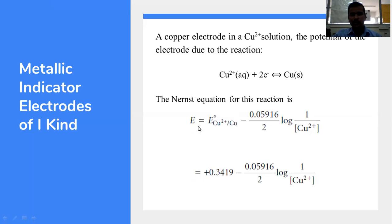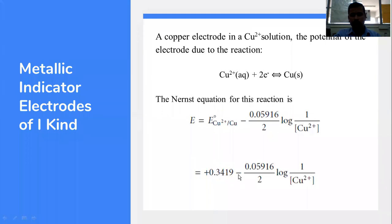This is called a reduction reaction. Writing the Nernst equation for this half-cell: E = E° (Cu²⁺/Cu) − 0.05916/2 × log(1/[Cu²⁺]). Here, n = 2 because two electrons are added to Cu²⁺. From the electrochemical series, the standard state reduction potential for the Cu²⁺/Cu couple is +0.3419 V. So E = +0.3419 − 0.05916/2 × log(1/[Cu²⁺]).